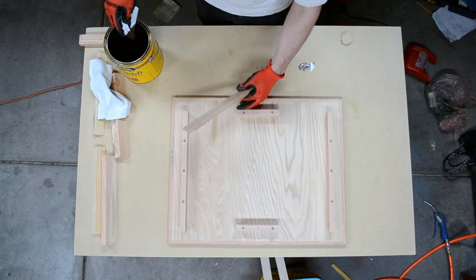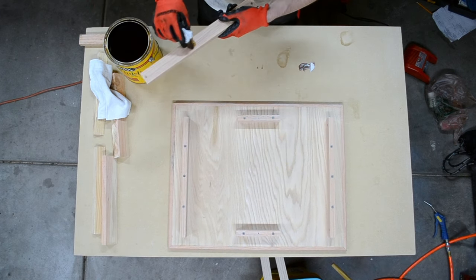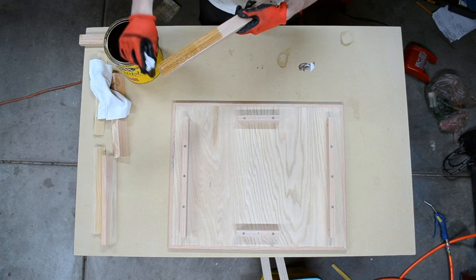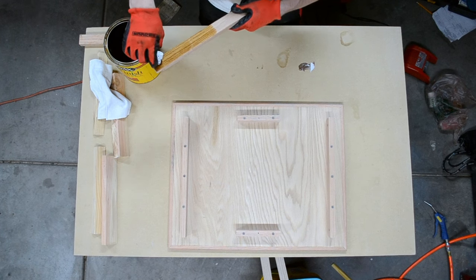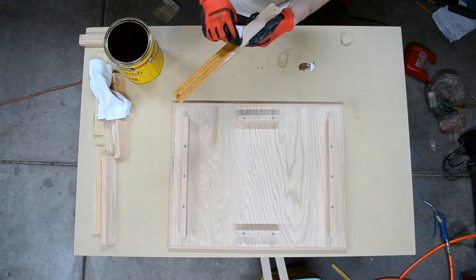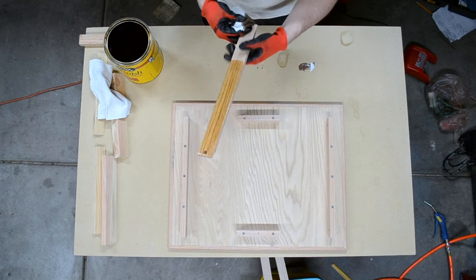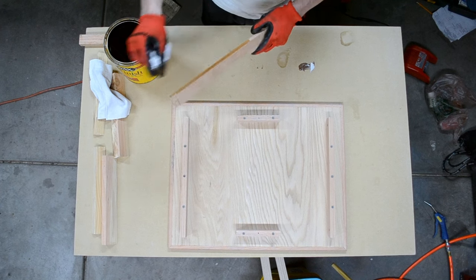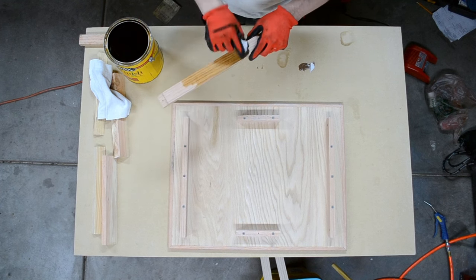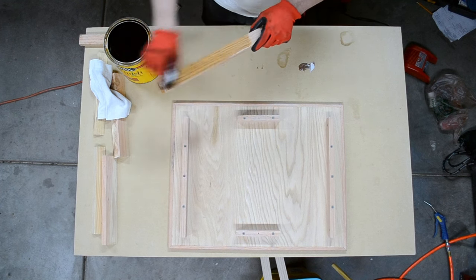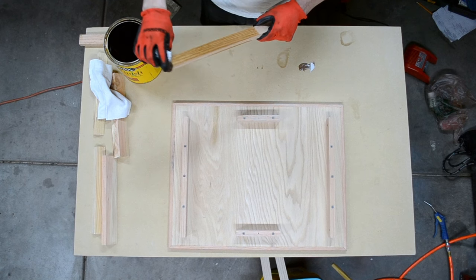So all I am doing for this project is just dipping it in the stain and just rubbing it on. Making sure that I get down in all the little nooks and crannies. I don't want to let this stuff soak on too much just because of the color that I am going for. So I am strictly just going to be wiping it on and then basically wiping it right off.